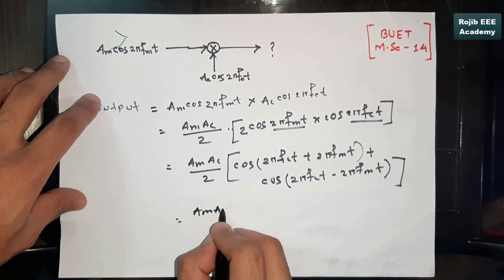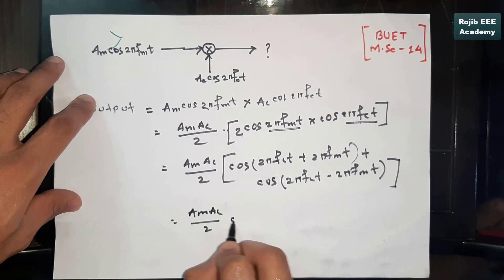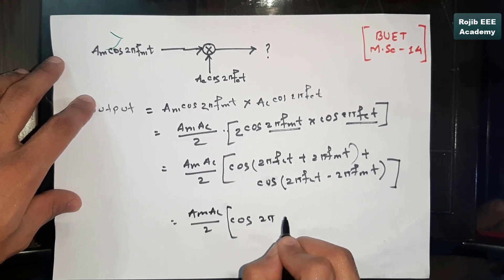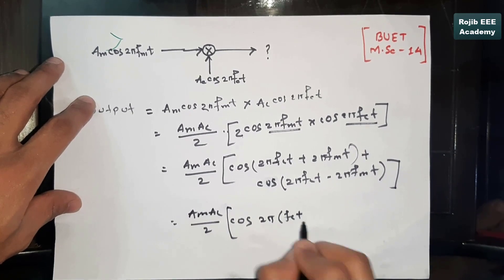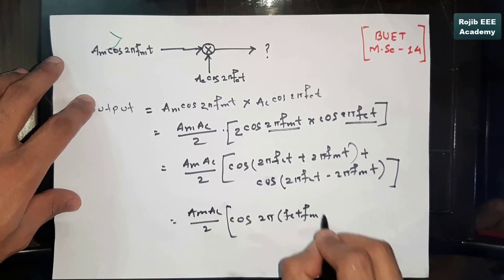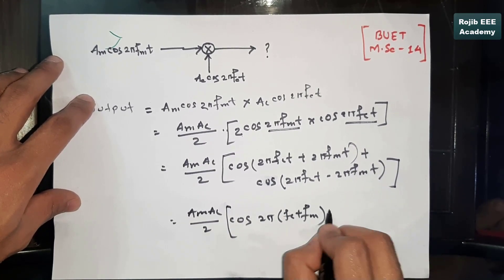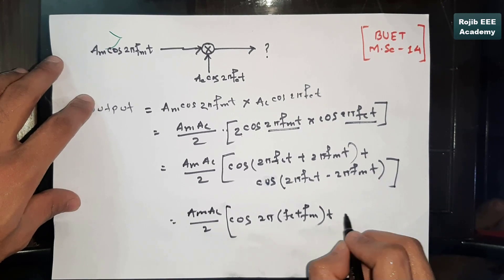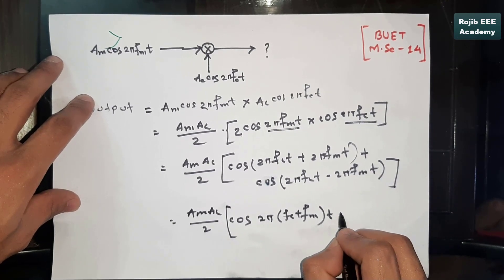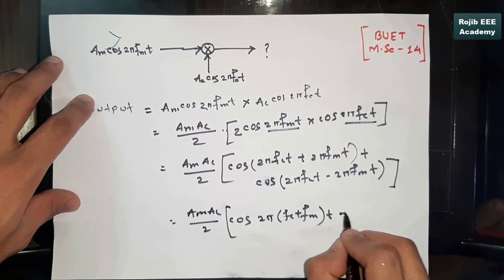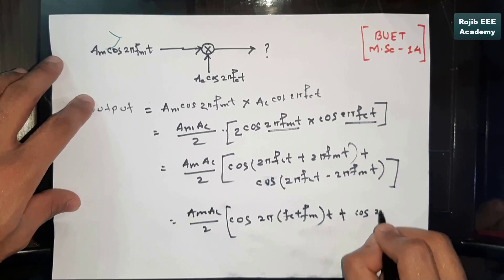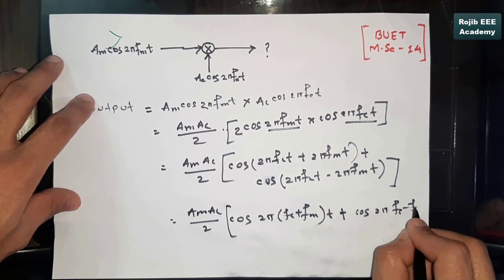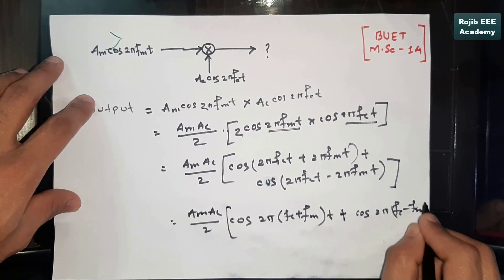The result is (Am·Ac)/2 divided by 2, with 2π common. This gives us (fc + fm)·t for the upper sideband, plus cos(2π·(fc − fm)·t) for the lower sideband.